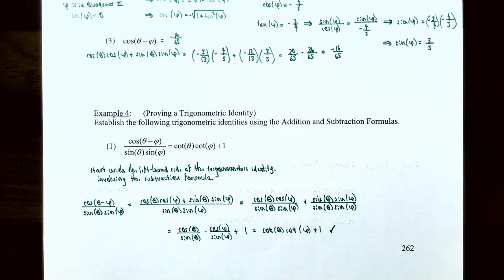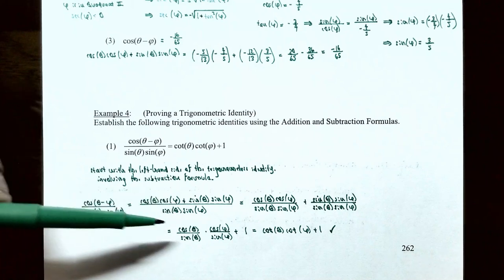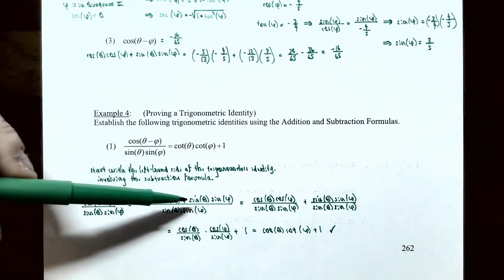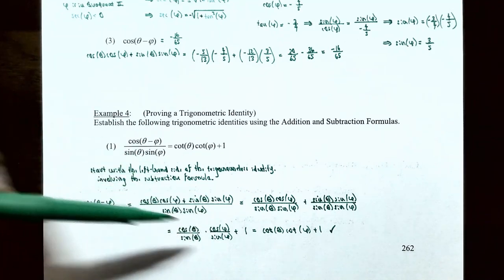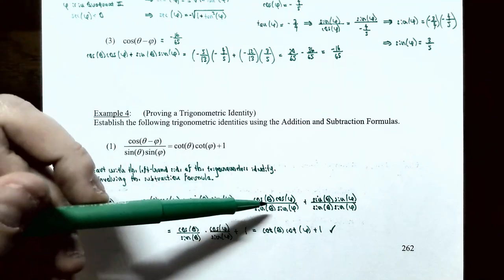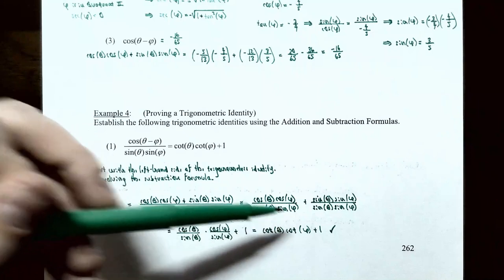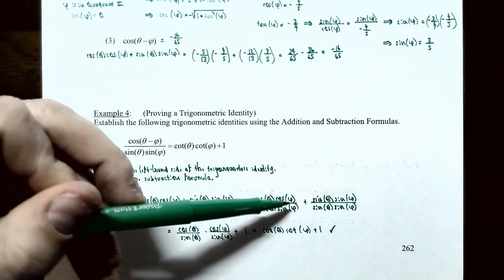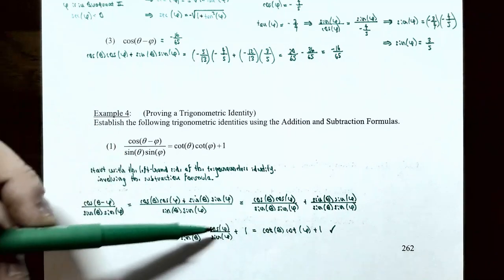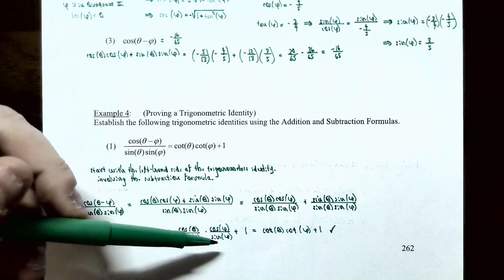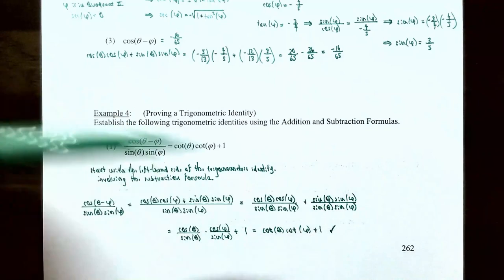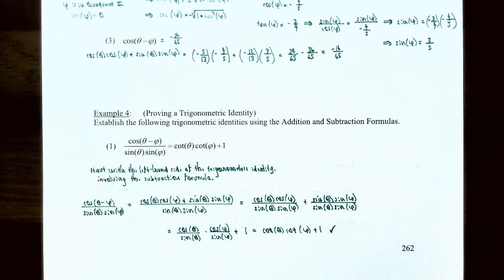Let's rewrite this one fraction into a sum of two fractions. The first fraction will be cosine of theta times cosine of phi divided by sine of theta times sine of phi, and the second fraction will be sine of theta times sine of phi divided by sine of theta times sine of phi. That second fraction simplifies to one, since you're dividing identical numerator and denominator.